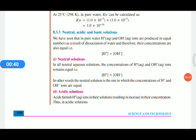In the case of neutral solution, the concentration of H plus and OH minus ions remains equal. We can say that the neutral solution is the one in which the concentration of H plus and OH minus ions are equal. If a solution is neutral, its H plus and OH minus ions should be equal.